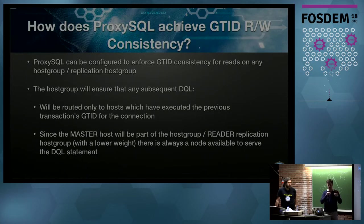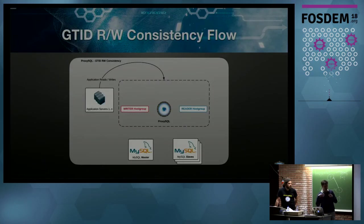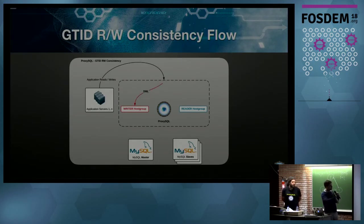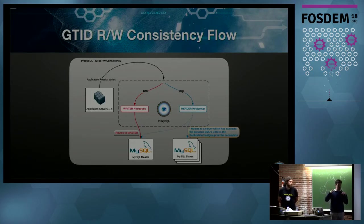ProxySQL can be configured to enforce consistency on specific host groups. When a session is initiated and transactions are occurring, ProxySQL will check the status of a host before routing a SELECT. It will check whether the last GTID executed for that session on a group of servers has been executed on the slave before sending the query. For a simple example with two slaves and one master: it checks the first slave — not found; checks the second — not found; then routes the query to the master. This way you always have fresh data. You can configure this just on a host group without necessarily needing the replication host group.